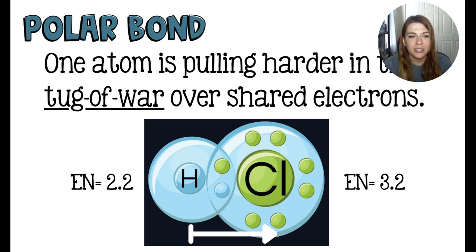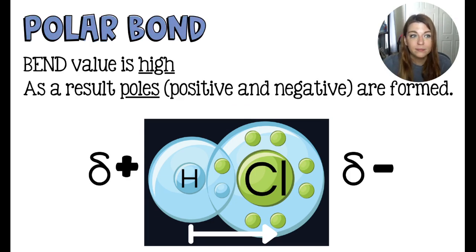When we subtract the electronegativity values, we are going to come out with 1.0. And knowing that the electronegativity scale is only like 3.3 in difference between the highest and the lowest, that's really a big difference. Because the bend value is high, or the bond electronegativity difference is high, the result is a polar bond where we have a positive and a negative pole.